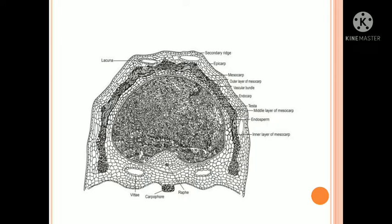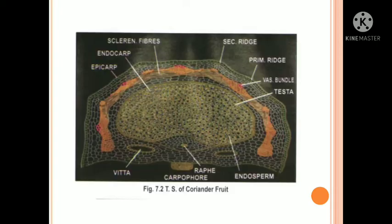The diagram shows Epicarp, Mesocarp, Endocarp. The inner center shows Carpophore attachment, Vitae, and Raphe. It also shows oil glands and Calcium Oxalate Crystals in the section.